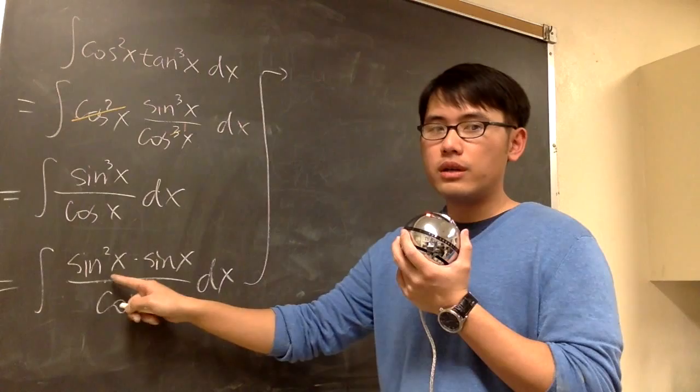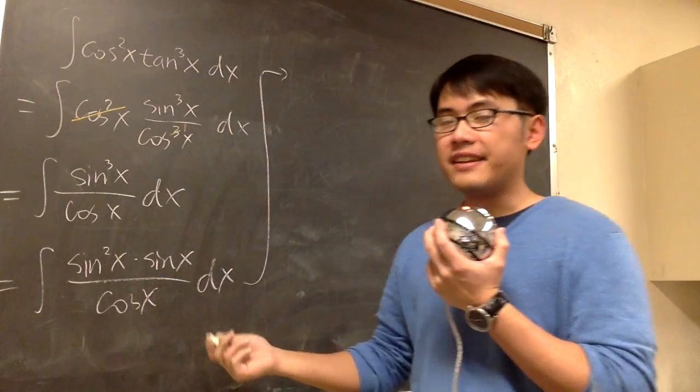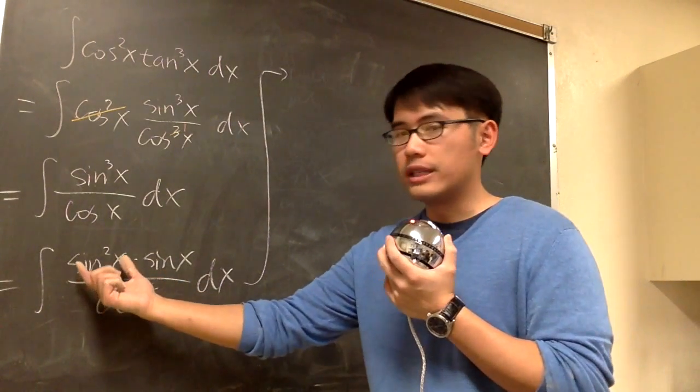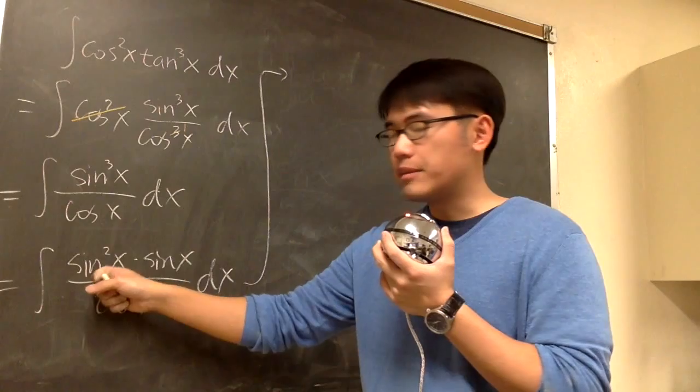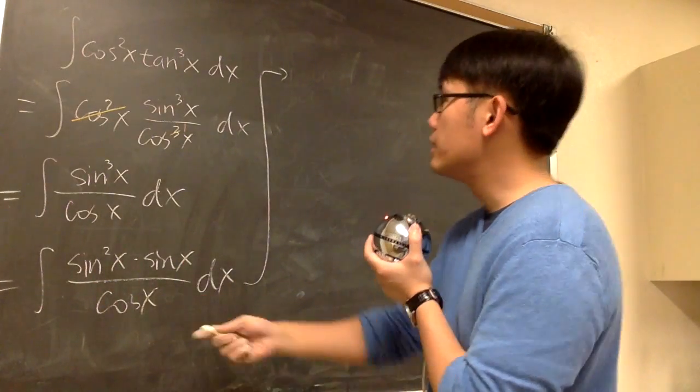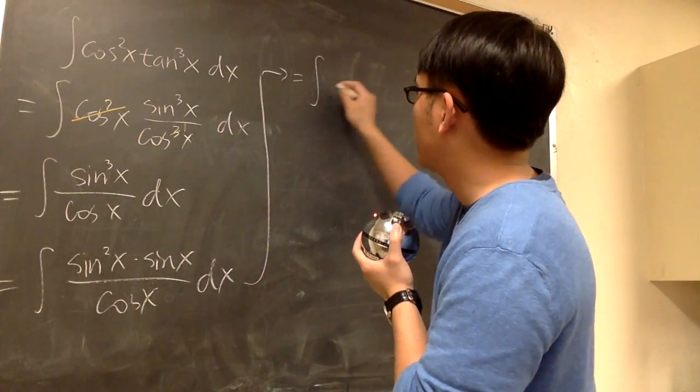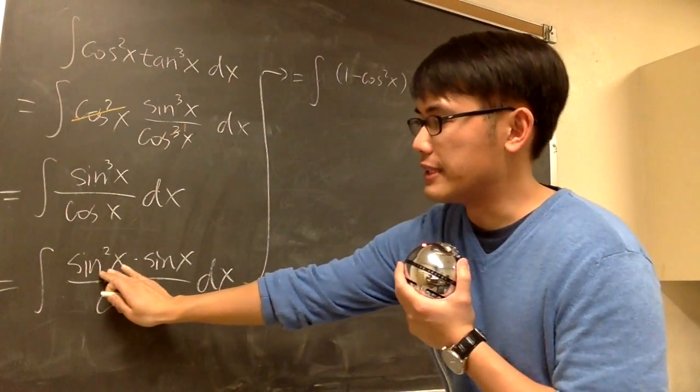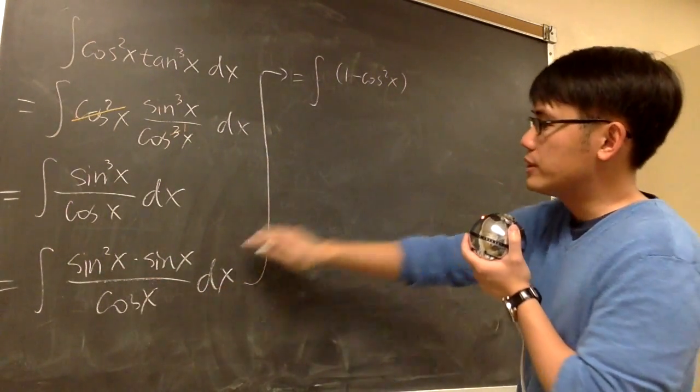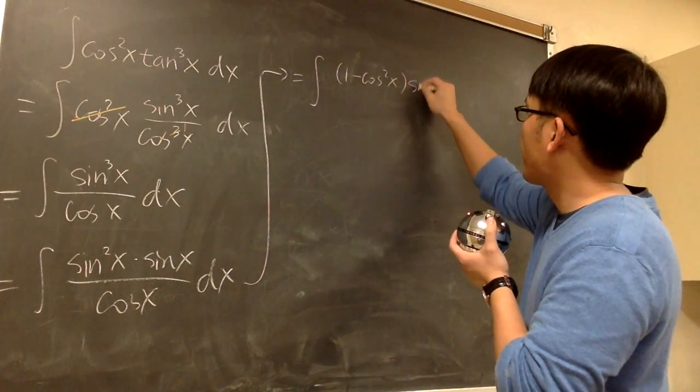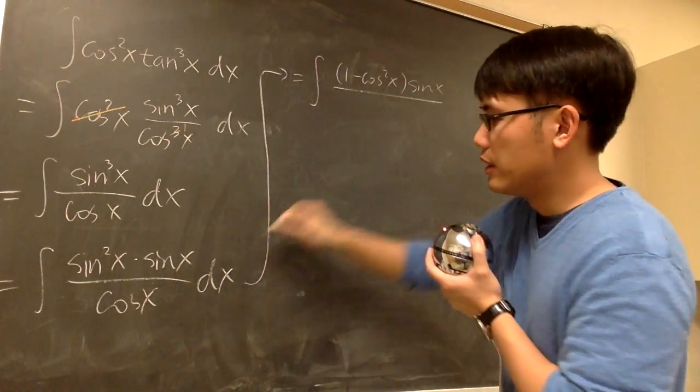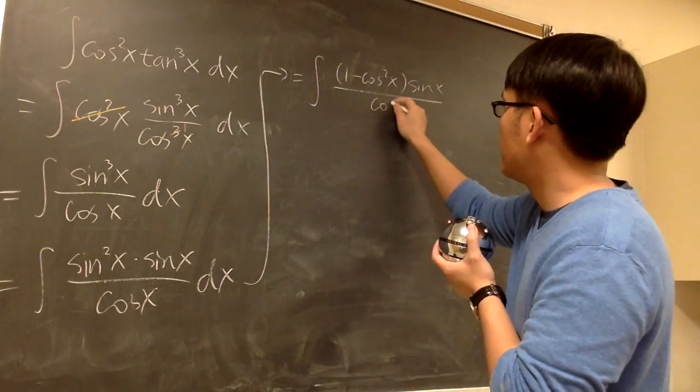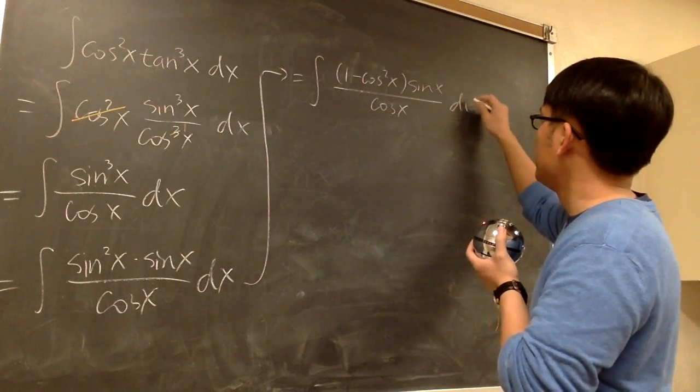Because once you have the even power sine squared, I can use an identity. I would like to produce cosine right here. This is the same as 1 minus cosine squared. So that would be the same as the integral, 1 minus cosine squared x. That's for the sine squared. And then we still have the sine right here over cosine x dx.